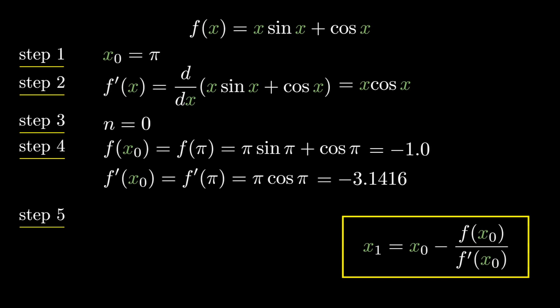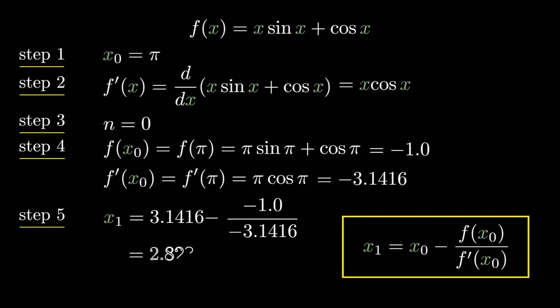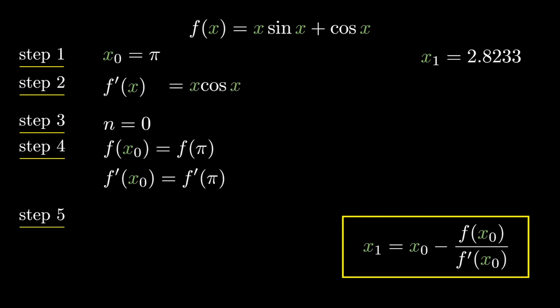Finally in step 5, let's find x₁ by substituting x₀, f(x₀), and f'(x₀) in the formula. We get x₁ = 2.8233. Since x₀ = π and x₁ = 2.8233, they are not the same, so let's continue with our iteration.